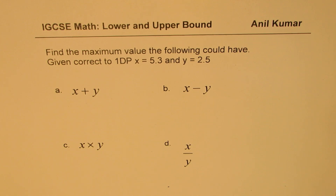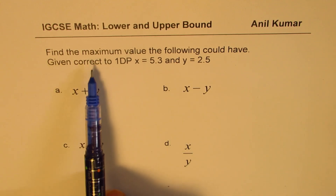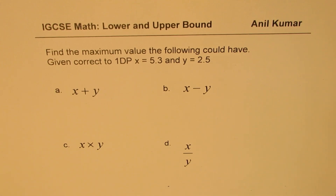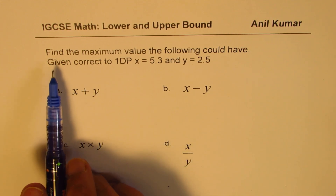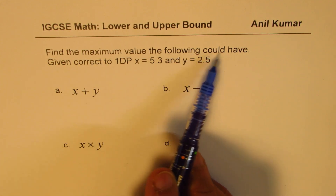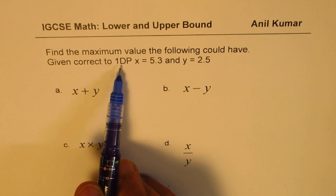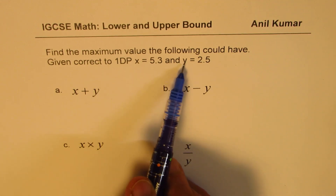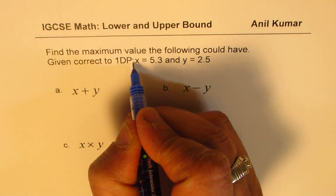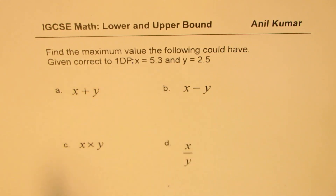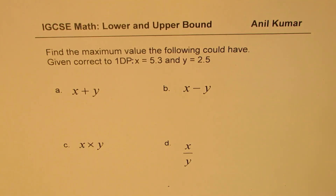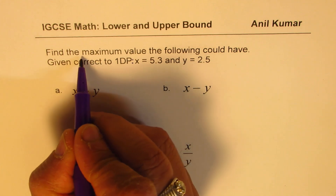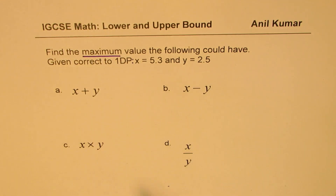The major question I have received from you is based on lower and upper bounds, especially how it makes a difference about maximum and minimum values when calculations are involved. So I've taken up an example here that should help us understand the whole concept. The question is: find the maximum value the following could have, given correct to one decimal place — X equals 5.3 and Y equals 2.5. We are given the values of X and Y correct to one decimal place, and we have to find the possible maximum value for these calculations.